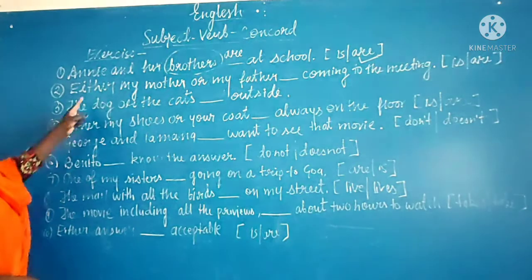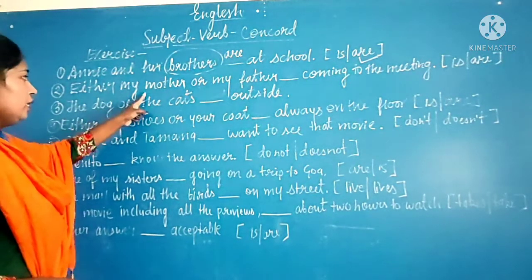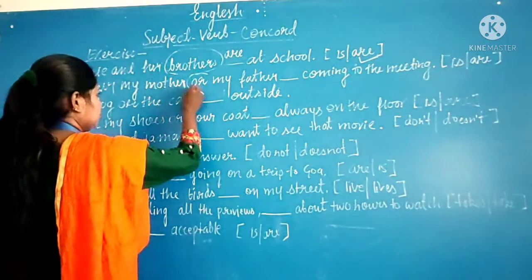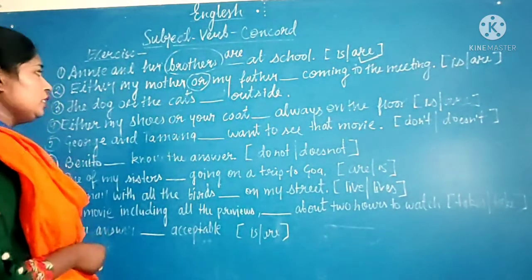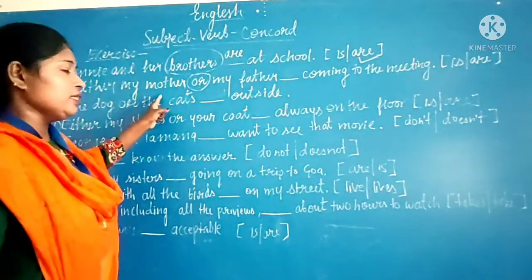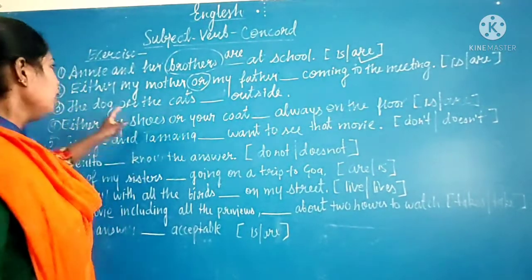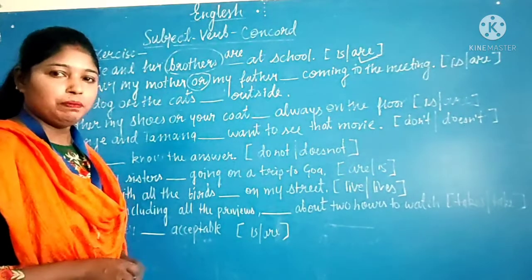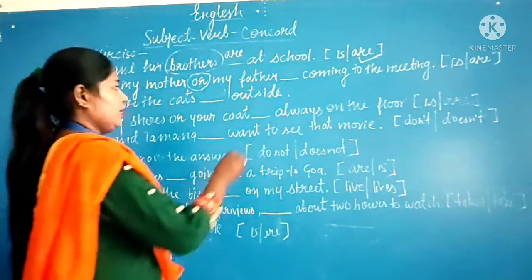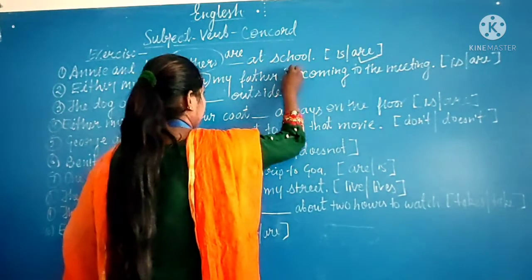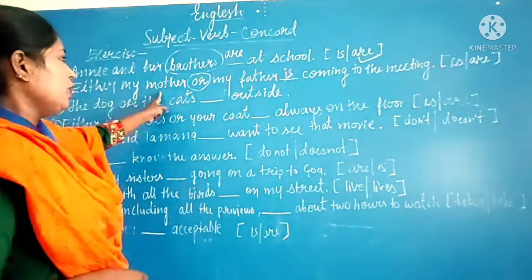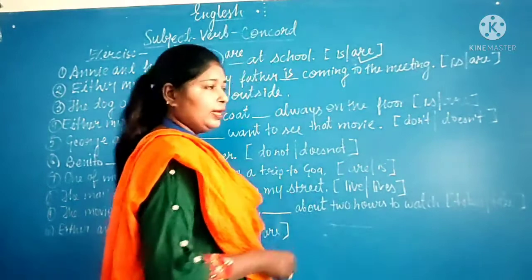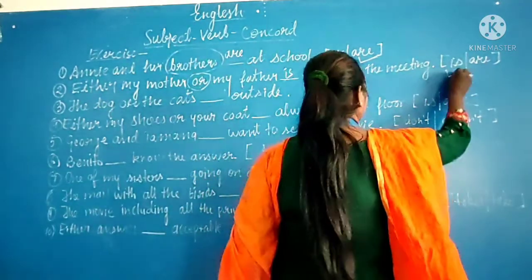The second sentence is: 'Either my mother or my father ___ coming to the meeting.' Here 'either/or' is used, which means there is a choice between two options. We are talking about a single person at a time, so 'is' is the correct answer. Either my mother or my father is coming to the meeting.